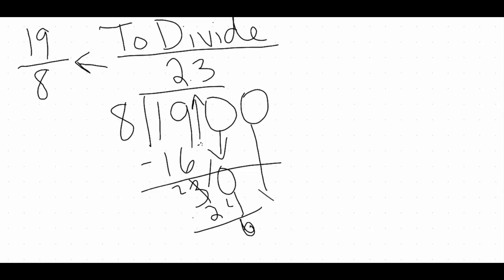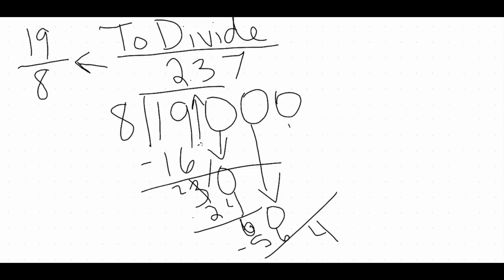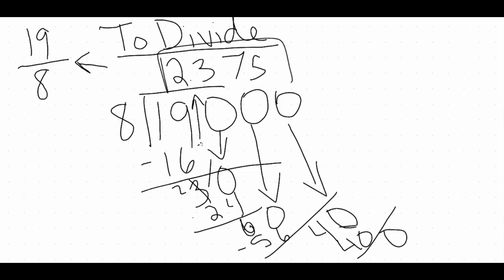We add another 0 and drop that down, now dividing 8 into 60. 8 goes into 60 seven times. 8 times 7 gives us 56, and when we subtract we get a 4. We need to add another 0 and drop that down to continue dividing. Remember, we keep dividing until we get a 0 as our remainder. 8 goes into 40 five times, and 5 times 8 is 40. We get a 0 as a remainder, so we're done. Our decimal is 2.375.